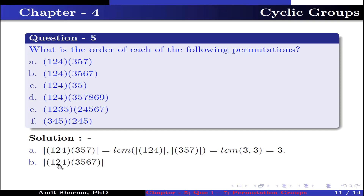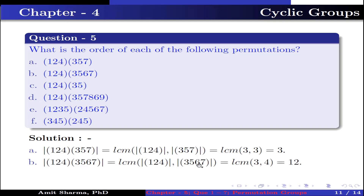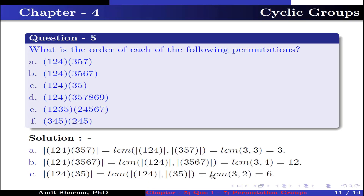Part B: order of (1 2 4)(3 5 6 7) equals LCM of order of (1 2 4) and order of (3 5 6 7). Both are disjoint. (1 2 4) is a 3-cycle and (3 5 6 7) is a 4-cycle, so LCM(3, 4) = 12. Therefore the order is 12. Part C: order of (1 2 4)(3 5) equals LCM(3, 2) = 6, since (1 2 4) is a 3-cycle and (3 5) is a 2-cycle. Therefore the order is 6.